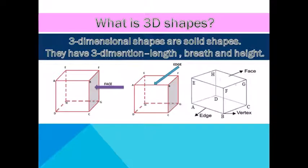Now, what is a 3D shape? 3D shapes are solid shapes. They have 3 dimensions: length, breadth and height. The main components of 3D shapes are face, edge and vertex.